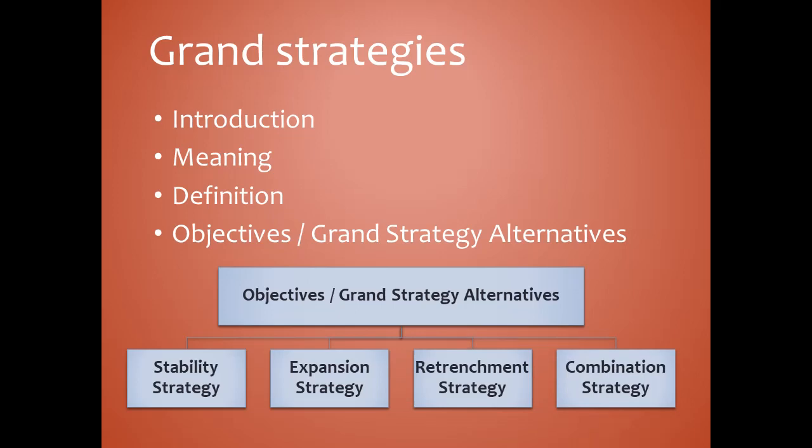Combination strategy means a combination of two or more corporate strategies. A combination strategy can be exceptionally risky if carried out too far — similar to stability strategy, if it is carried out too far or long-term it will be a risk. Difficult decisions must be made and priorities must be established, as organizations, like individuals, have limited resources and must choose among alternative strategies.